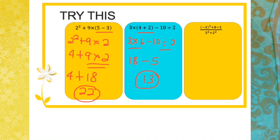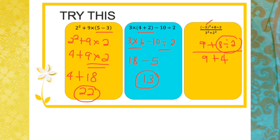The last example has a fraction. We handle the numerator and denominator separately. In the numerator: (-3)² + 8 ÷ 2 — the brackets give positive 9, then 8 ÷ 2 = 4, so 9 + 4 = 13. In the denominator: 3² + 2² = 9 + 4 = 13. Therefore, 13 ÷ 13 = 1.